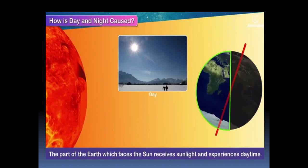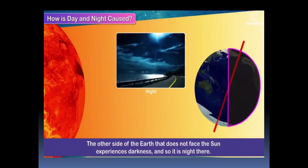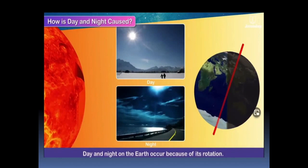The part of the earth which faces the sun receives sunlight and experiences daytime. The other side of the earth that does not face the sun experiences darkness and so it is night there. Day and night on the earth occur because of its rotation.